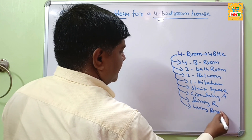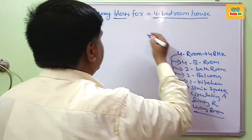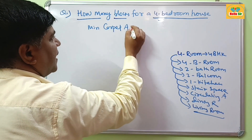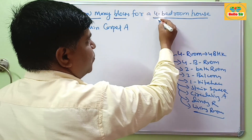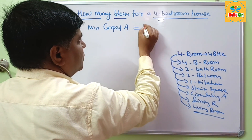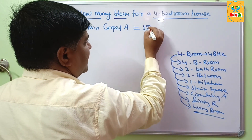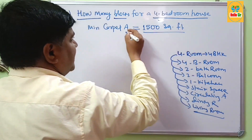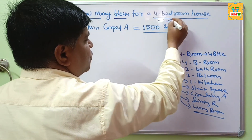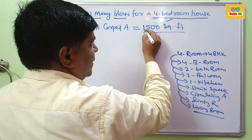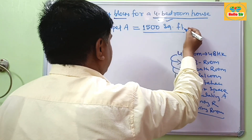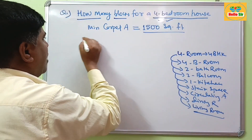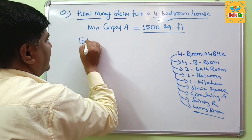What is the minimum carpet area required to build a 4-bedroom house? On average, about 1500 square feet of carpet area is required to build a 4-bedroom house. Now, how do we calculate the total walls area?